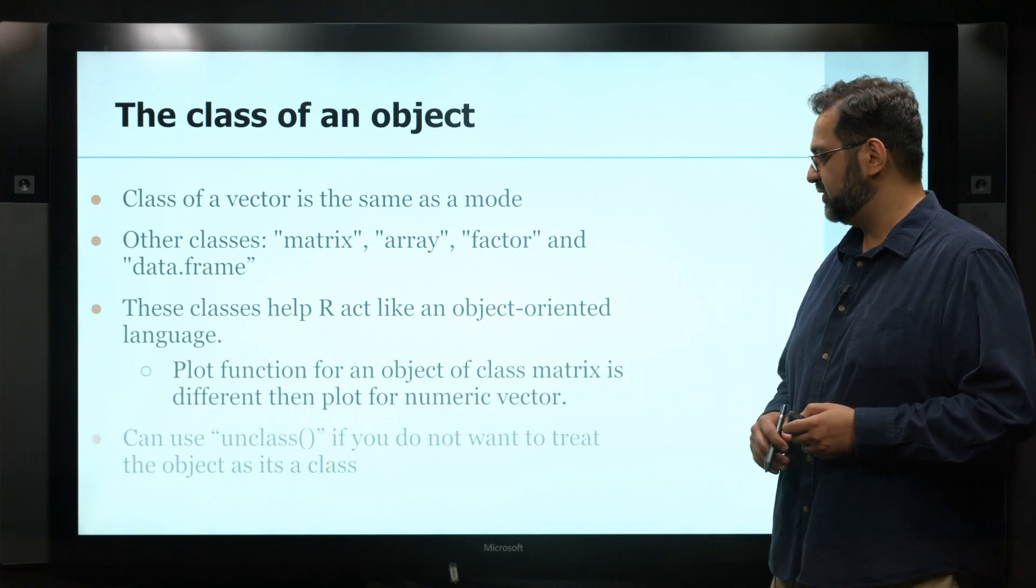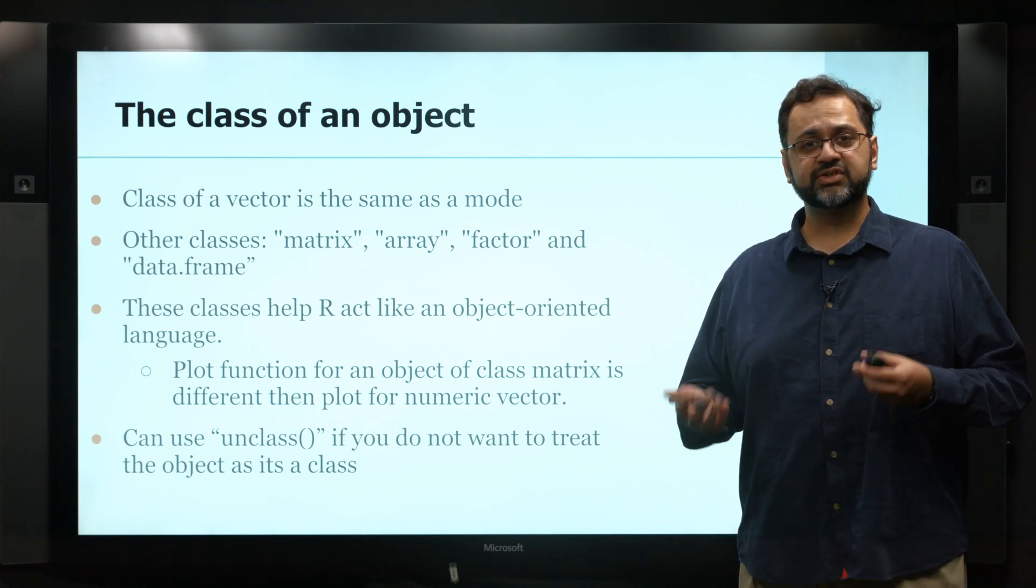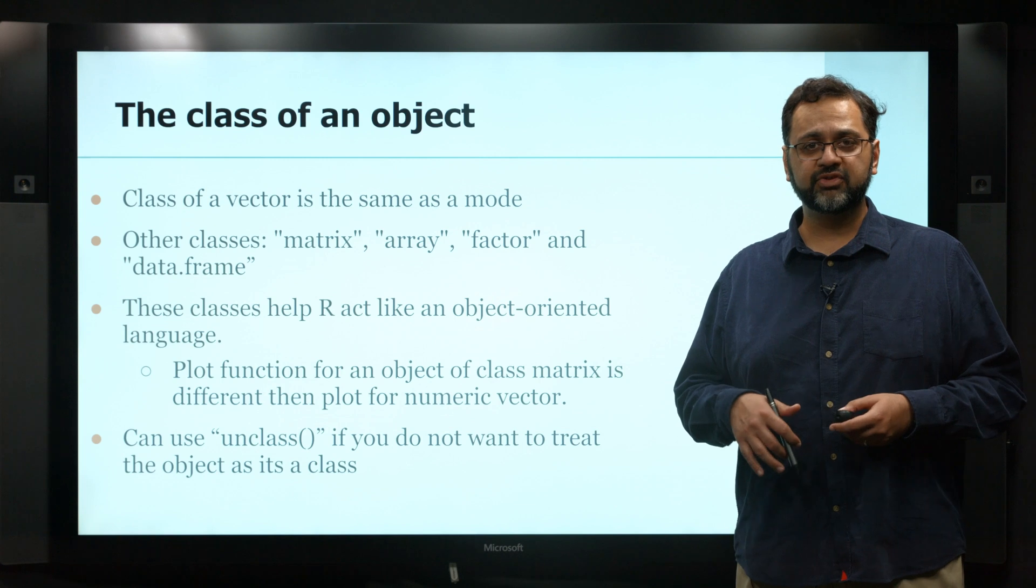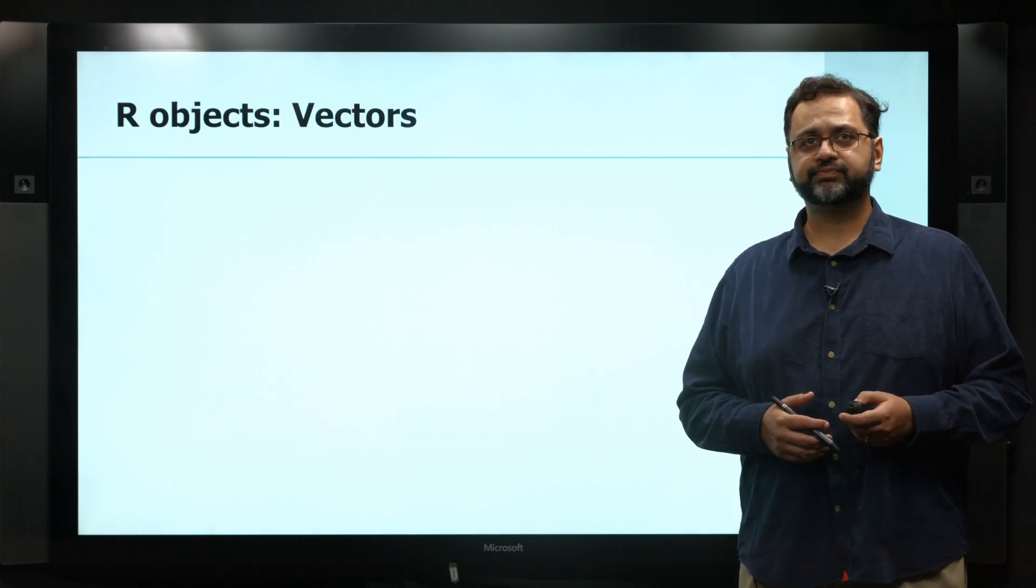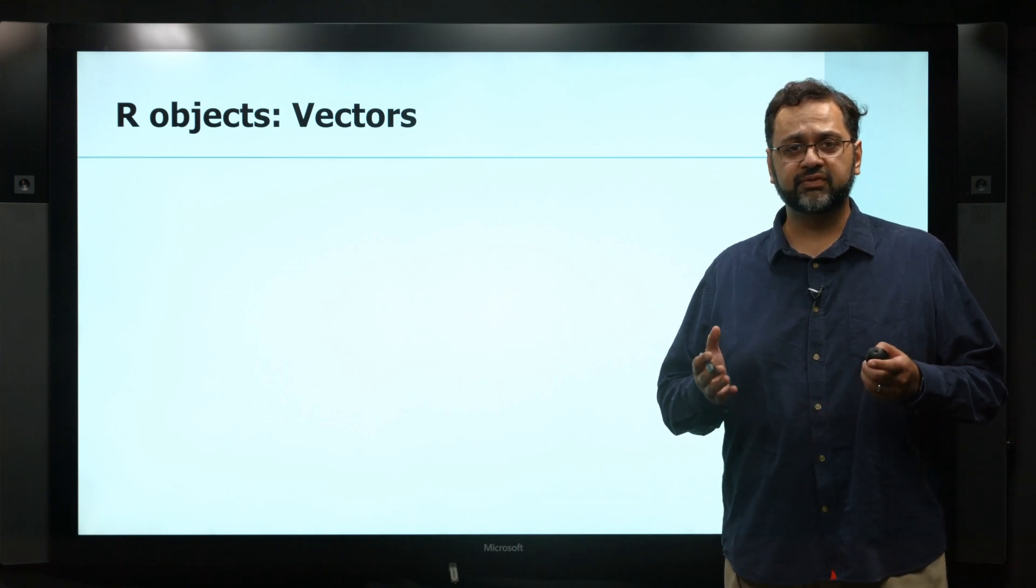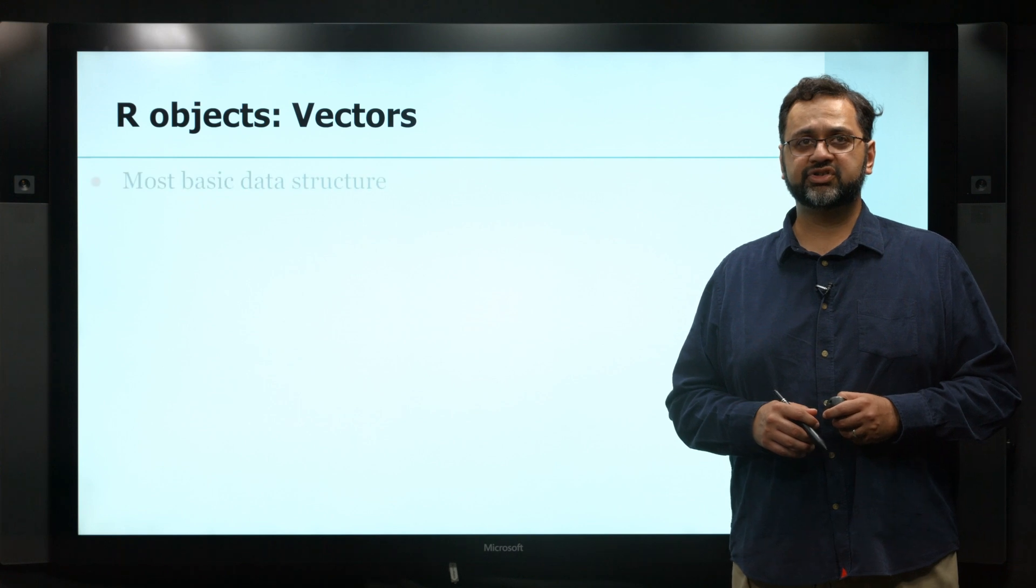Just like the plot function, you can unclass something, which makes it into its simplest form, basically a vector, if you ever need to do that. And sometimes you do. Let's start with vectors - they're our simplest, most basic form of data structures.